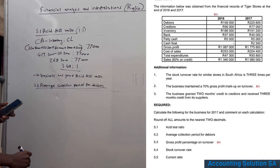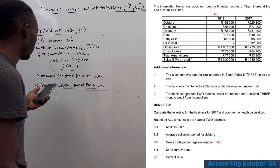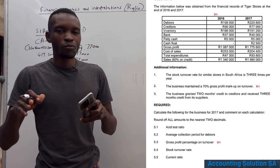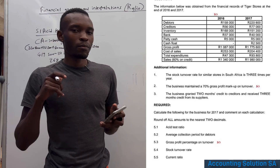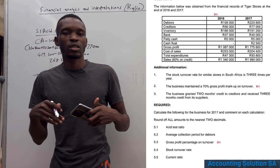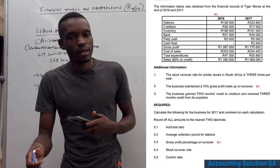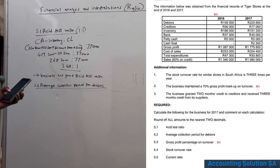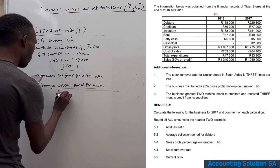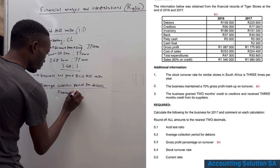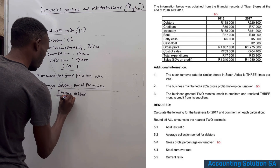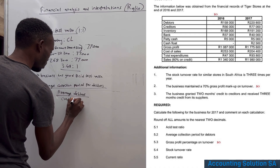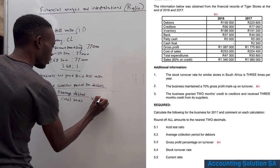This ratio shows how many days we take to collect money from customers who purchased on credit. The formula is: average debtors divided by credit sales, multiplied by 365.